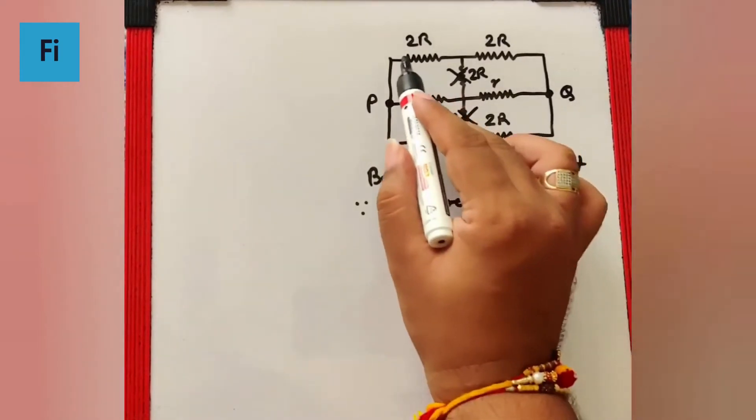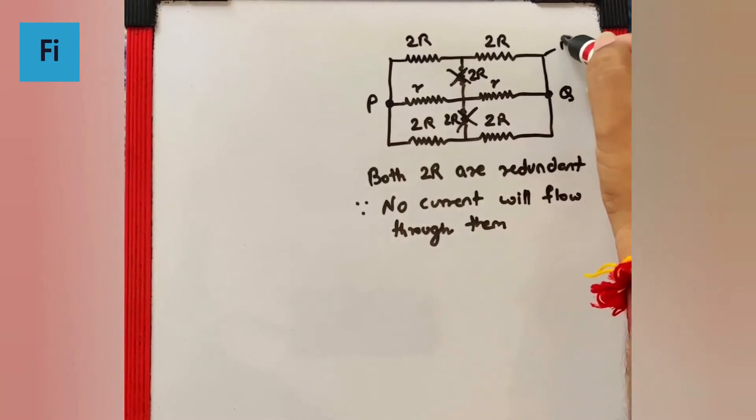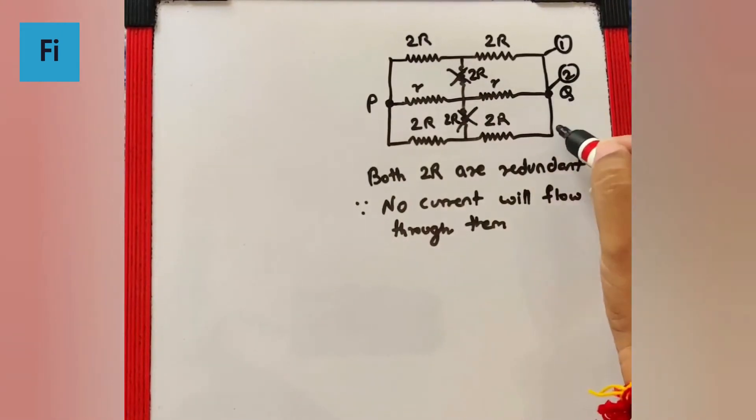So now I can say, if I call this as branch 1, branch 2 and branch 3,